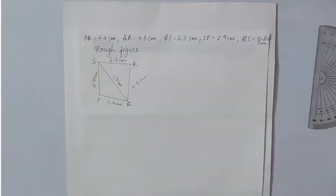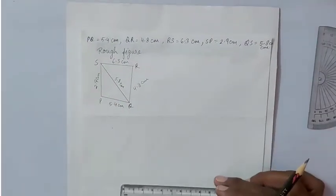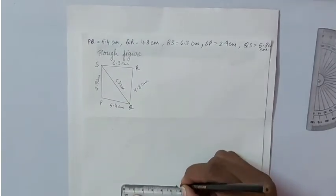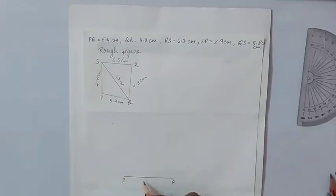We can see here, first of all we have to construct triangle PQS for which we will draw PQ 5.4 centimeter and label it PQ 5.4 centimeter.